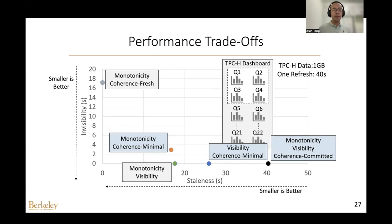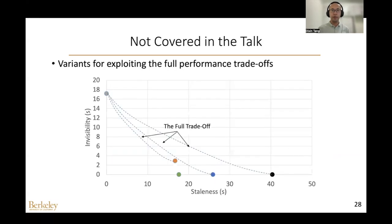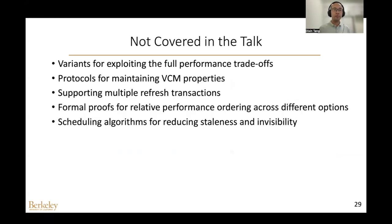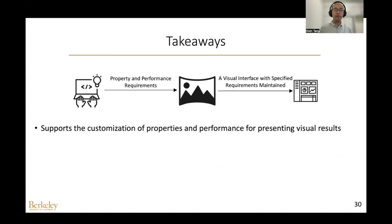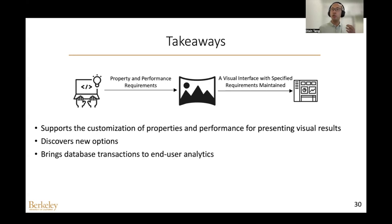Monotonicity plus coherence-minimal makes a pretty good performance trade-off: much smaller invisibility compared to coherence-fresh, and also smaller staleness compared to the other three property combinations. It is a good option for improving the freshness of visualization results if the user is willing to tolerate a small amount of invisibility while still maintaining coherence. There are still many things not covered in this talk, such as variants for exploiting the full performance trade-offs and the protocols for maintaining VCM properties. To summarize, Transactional Panorama is a framework supporting customization of properties and performance for presenting visual results, discovering new options and bringing database transactions to end-user analytics. Thanks for listening — I'd like to take any questions.